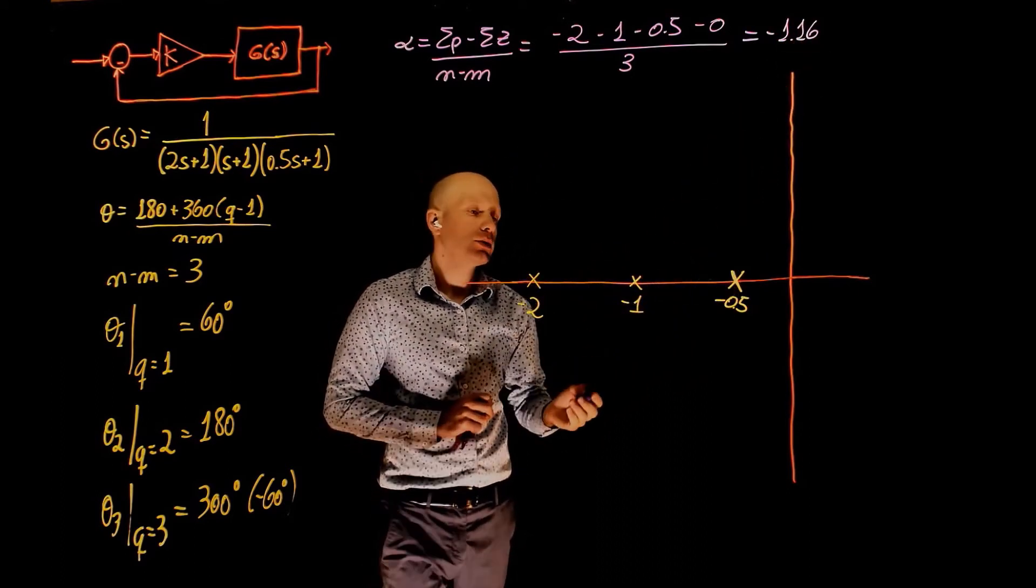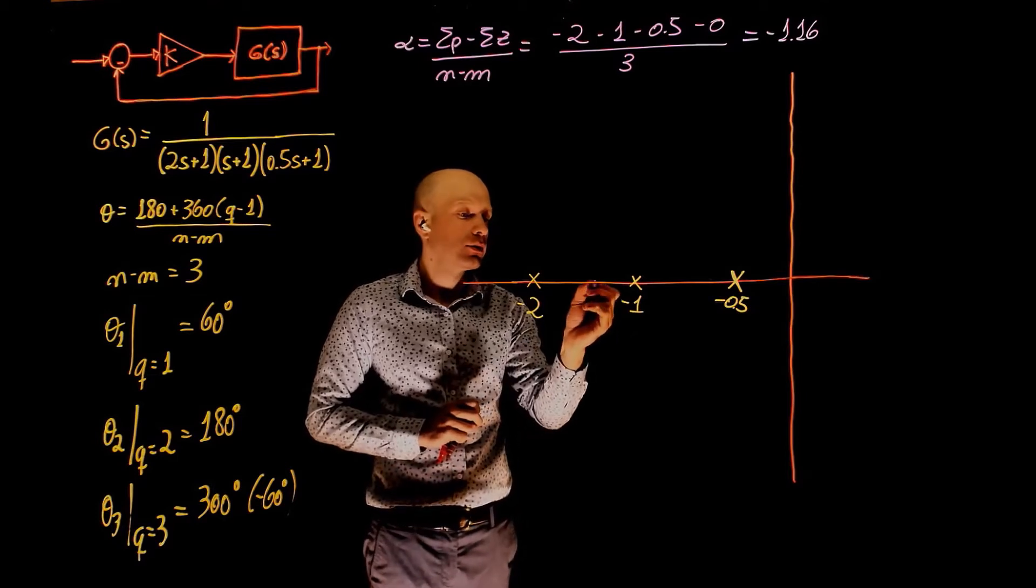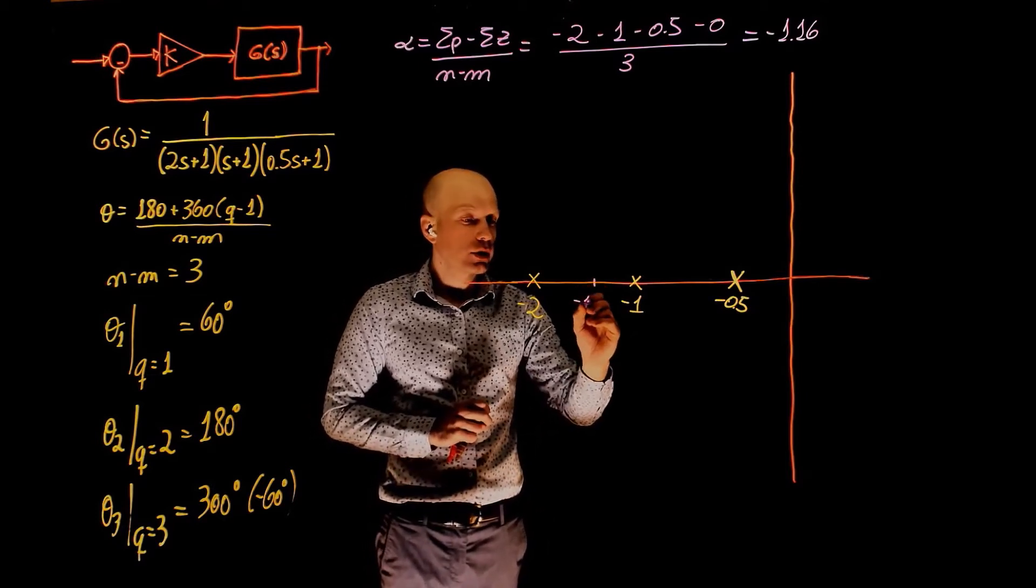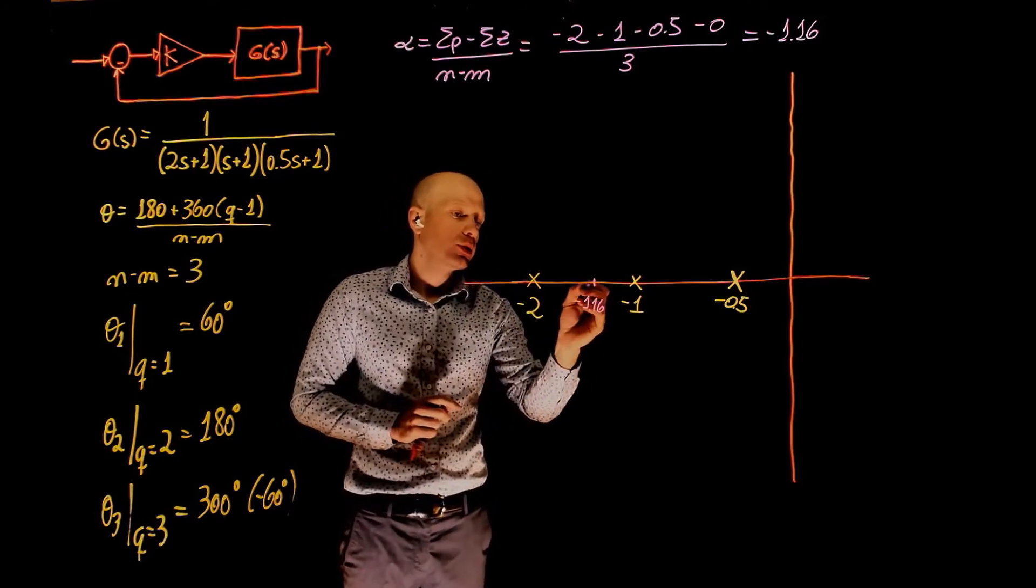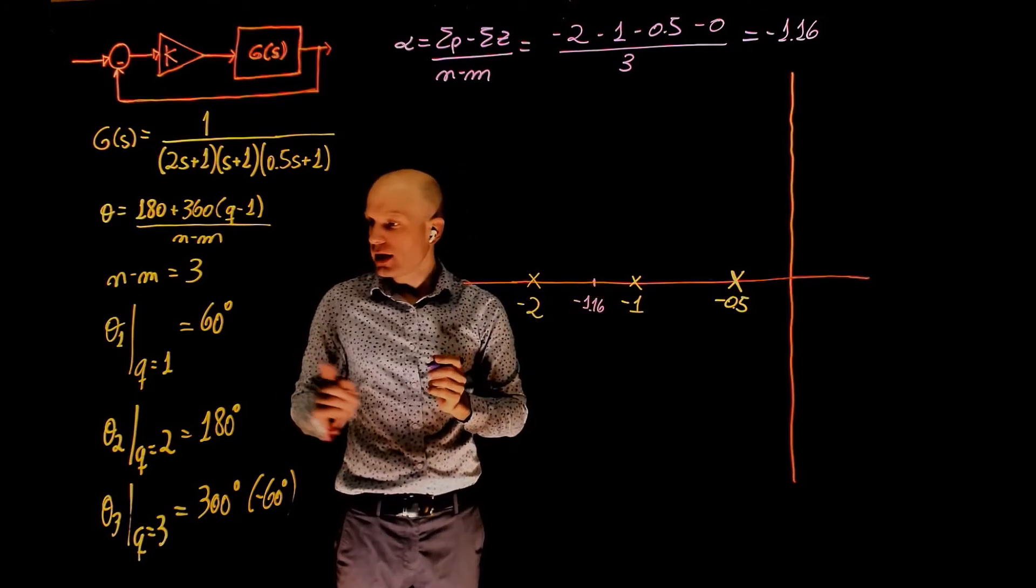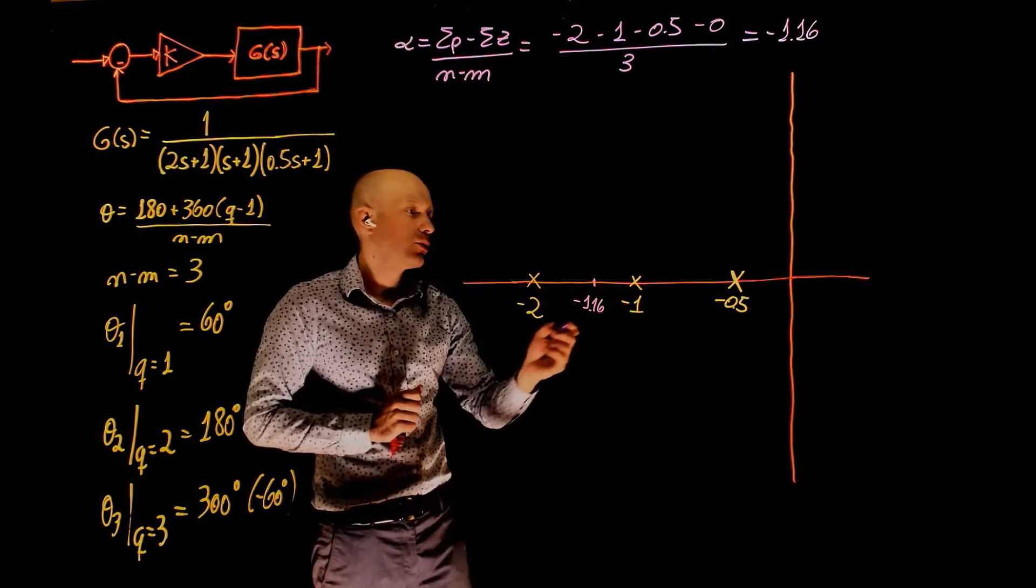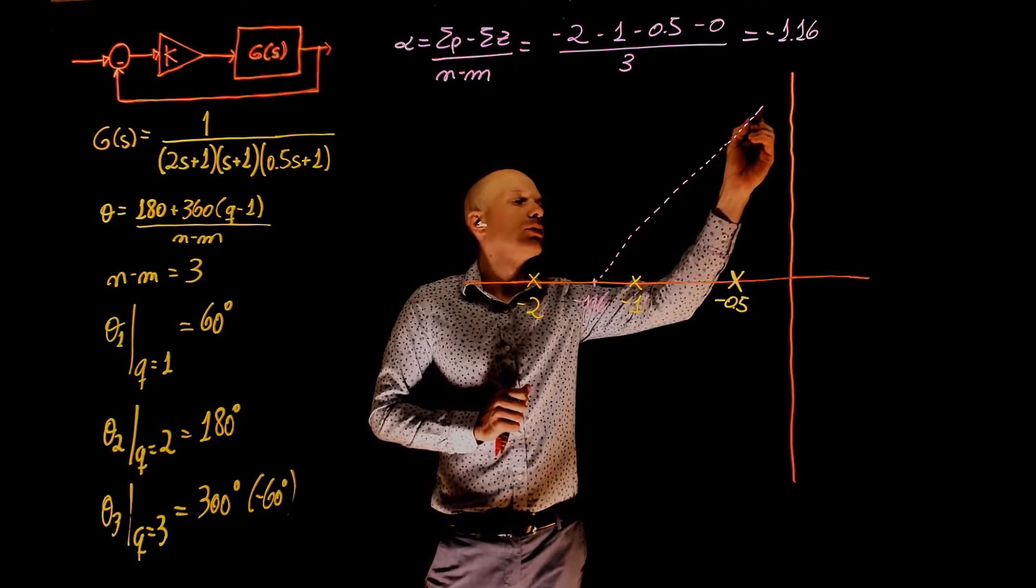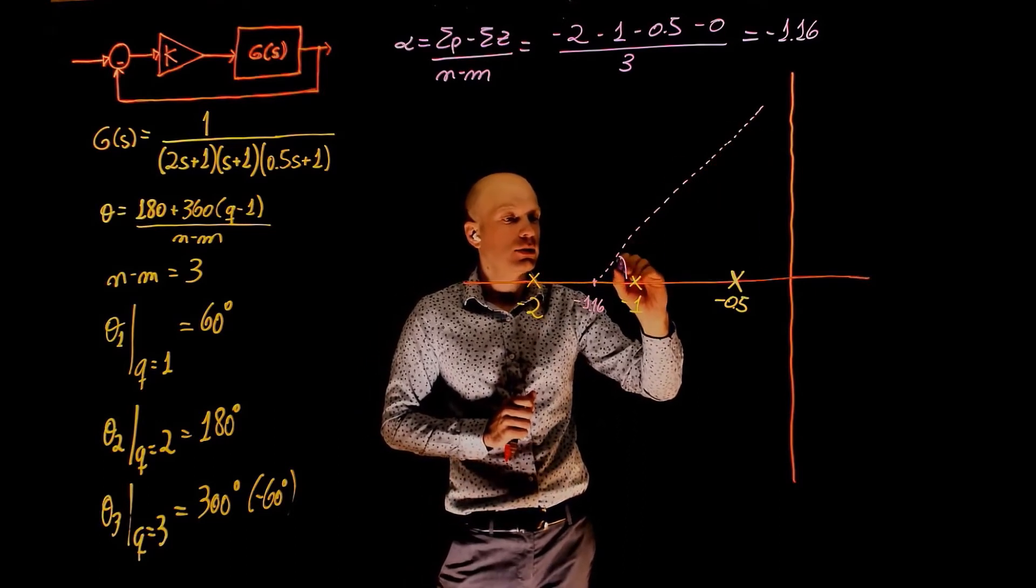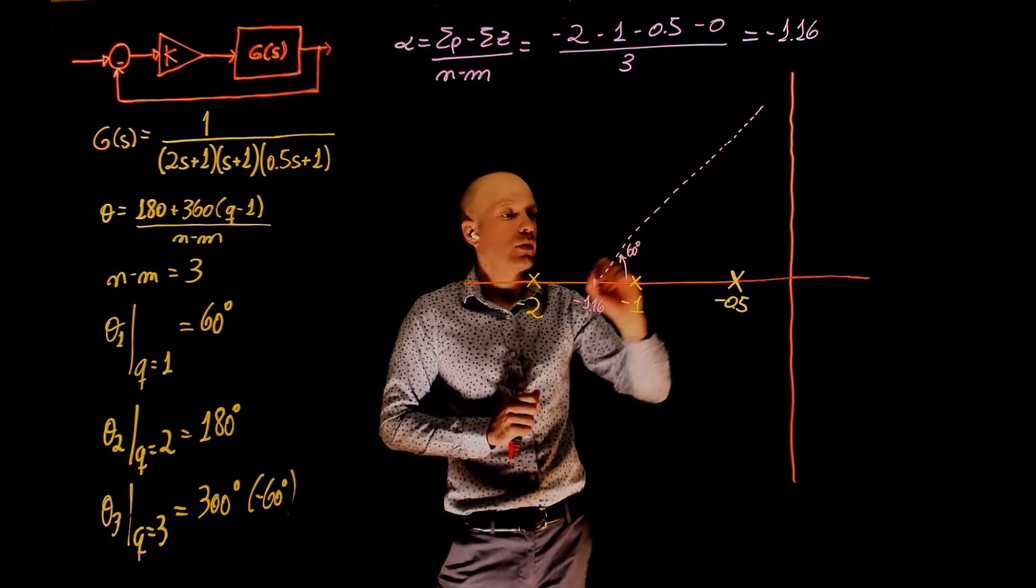The centroid of the asymptotes is at negative 1.16. Now we can trace these asymptotes. We know that this is the centroid. One of the asymptotes has an angle of 60 degrees with respect to the real axis. We can now create a 60-degree asymptote going up.